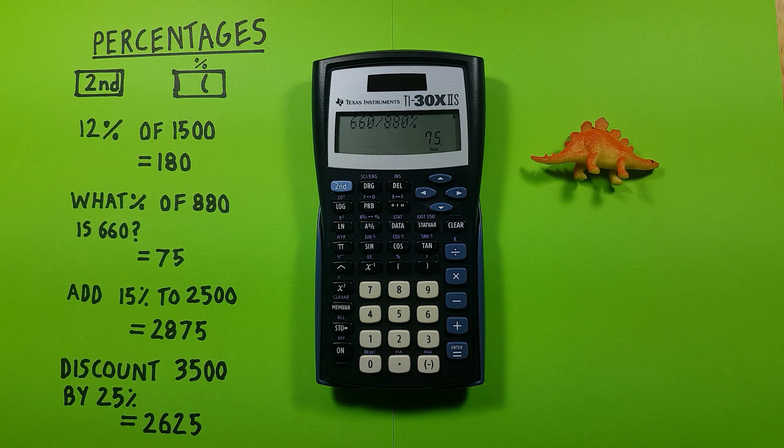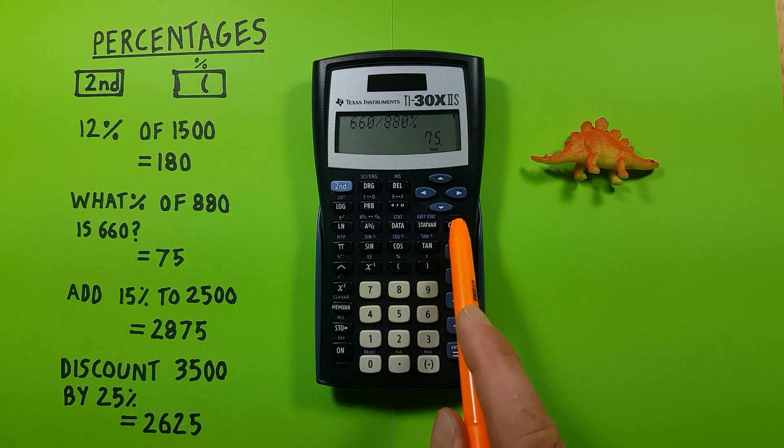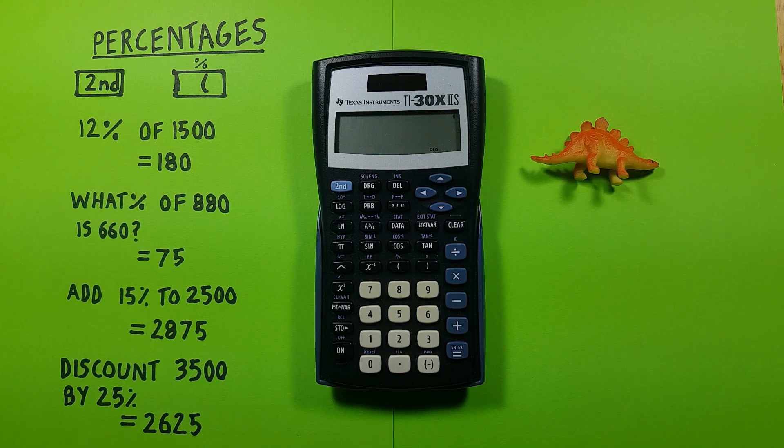So if on a test you got 660 out of 880, you would be at 75%. You can also use this to determine the prices after taxes or after discounts.